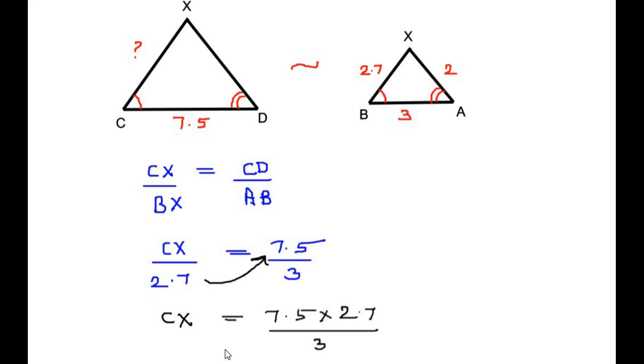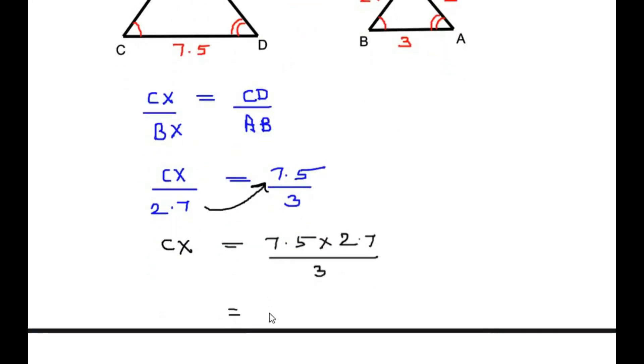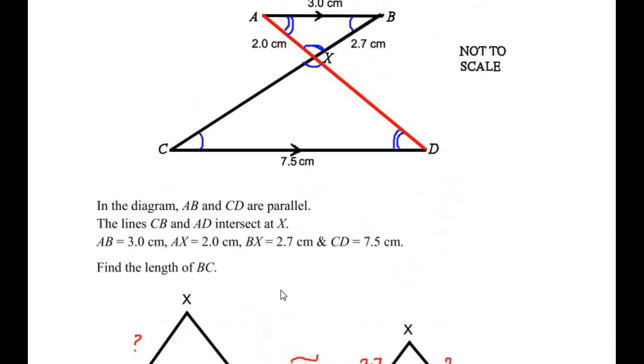So CX equals 7.5 multiplied by 2.7 divided by 3, which gives us a value of 6.75. We got the length of CX as 6.75 centimeters.